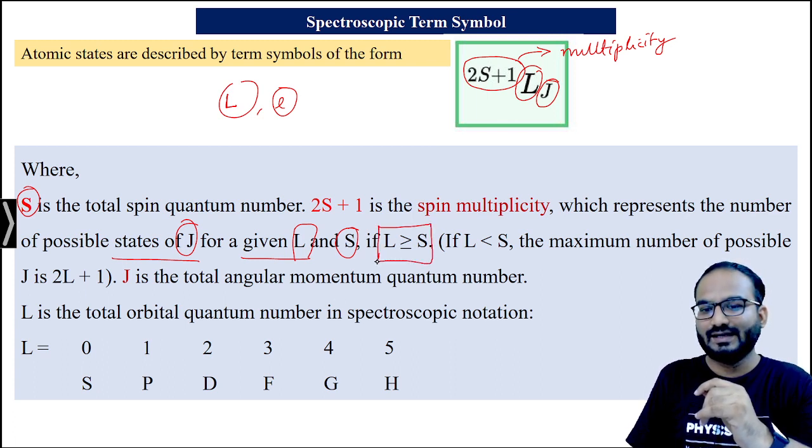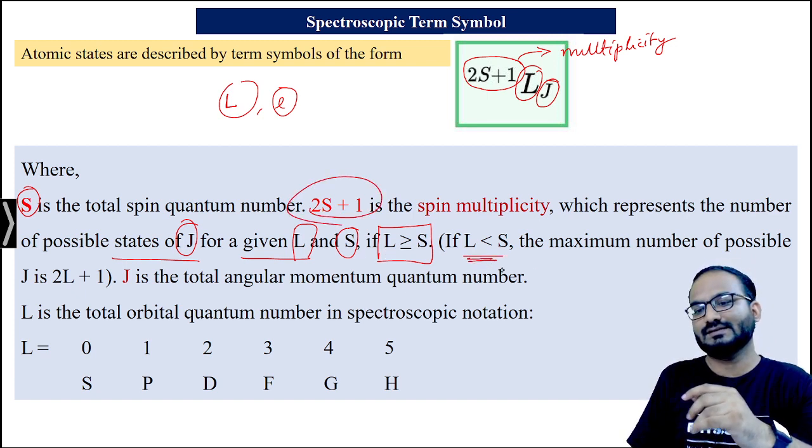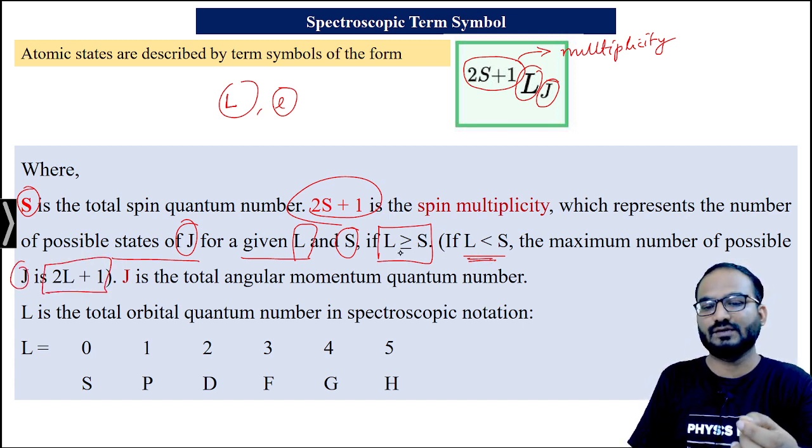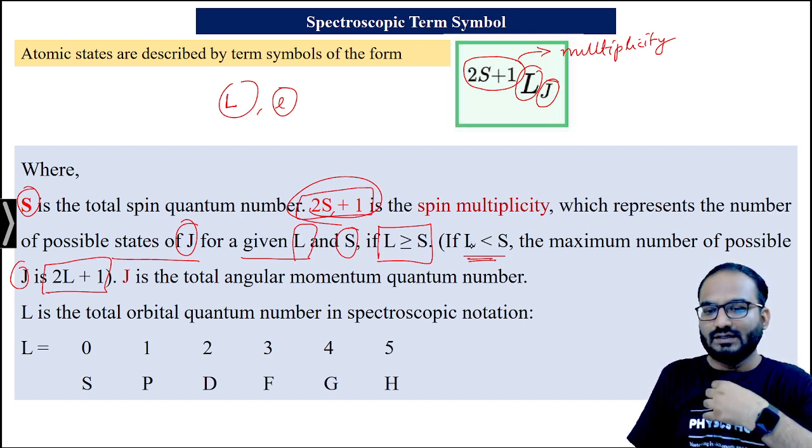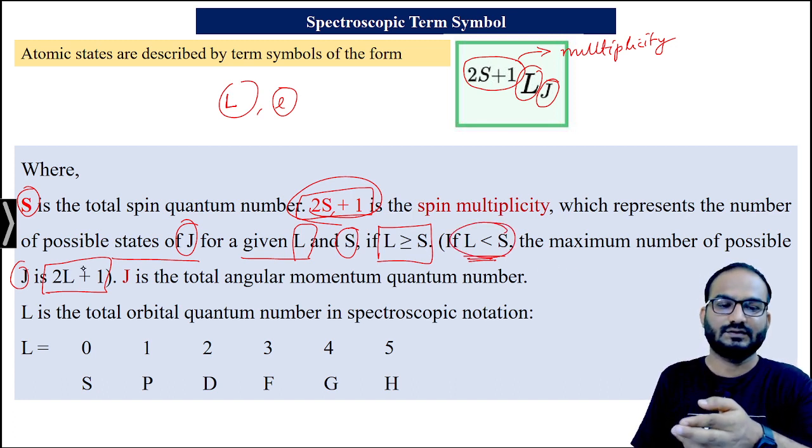If L greater than S, then the formula is 2S+1. If L less than S, the maximum number of possible J will be 2L+1. This happens very rarely. Most of the time L is greater than S, which is why 2S+1 represents the spin multiplicity. In any case where L less than S, the multiplicity will become 2L+1.